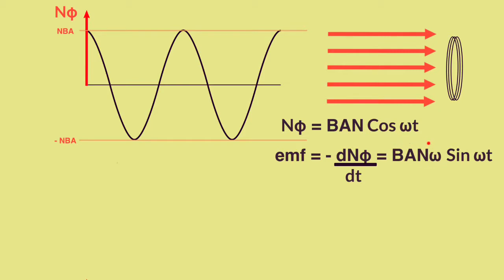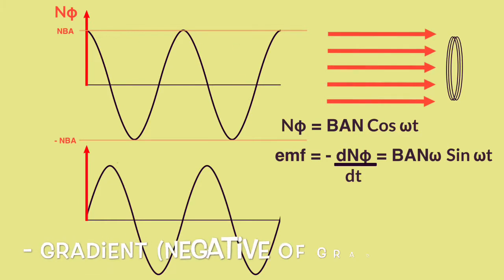When omega turns up in the amplitude term here, so this is going to be our maximum EMF, BANω, and it's going to follow a sine graph. What does that look like then? Well, it's going to look something like this. So this is now our EMF graph and it's essentially the gradient of the first graph.